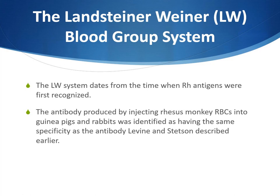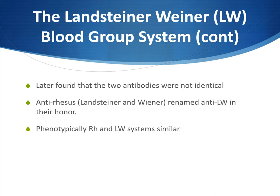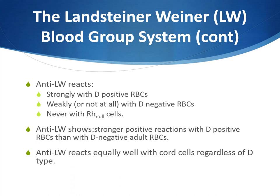The Landsteiner-Wiener blood group dates from the time Rh antigens were first recognized. The antibody produced by injecting rhesus monkeys into guinea pigs and rabbits was identified as having the same specificity as the antibody Levin and Stetson described earlier, but it was later found that anti-D and anti-LW are not identical. To differentiate between them: anti-LW will react strongly with D-positive adult cells but weakly with D-negative adult cells, and will react equally with D-positive and D-negative cord cells. Anti-D will only react with D-positive cord cells and D-positive adult cells, and not at all with D-negative cells.